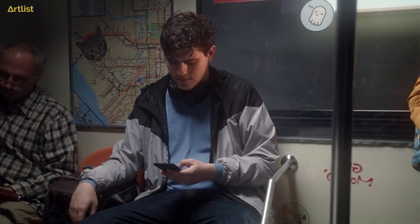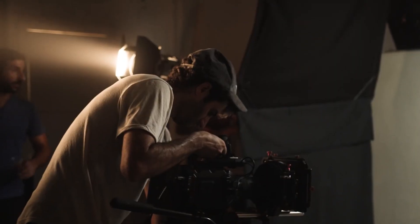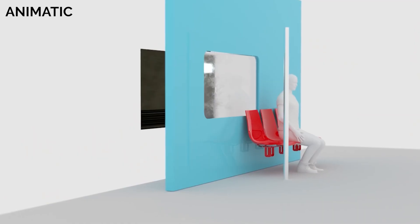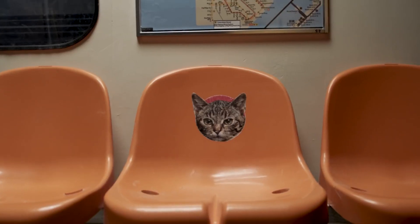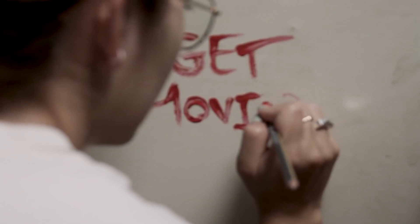You can also take this hack to the next level and be super creative with it. For example, we used this hack in our latest commercial, Life of an Indie Filmmaker. We created a realistic subway scene without actually leaving our studio. We built a set wall of a subway car with a window in the middle, with orange plastic chairs, a metal pole, a map, and a few stickers to sell it even better.